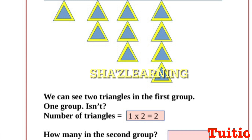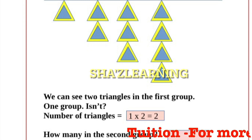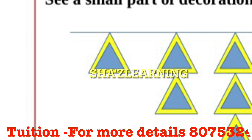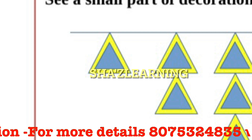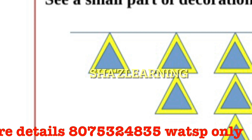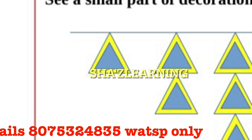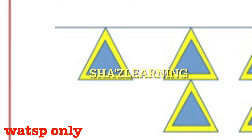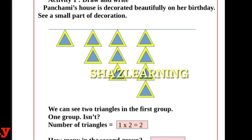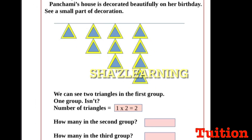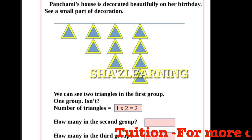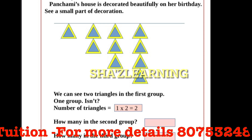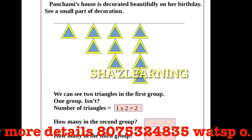We can see two triangles in the first group. In the first group, we have a triangle here. But there are two triangles — there is a yellow triangle and a blue triangle. In the first group, there is 1 group, and it is 1 into 2.